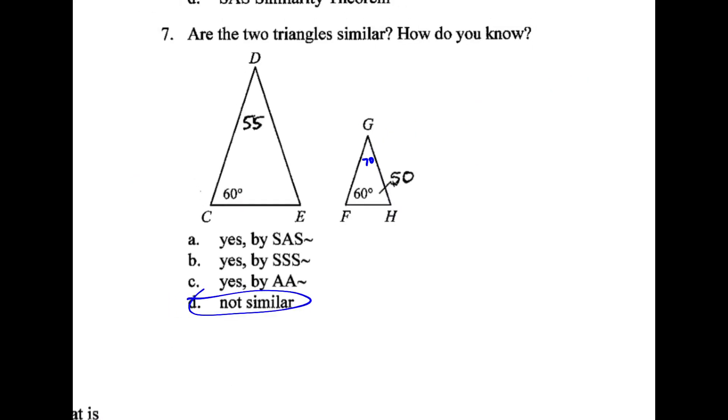Number 7, these are also not similar. If we figure out that h is 50, then g has to be 70, so the angles don't match. We've got to have at least two of the angles that match, then all three would. So 7 is d.